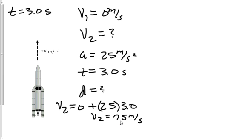Now what about finding displacement? Well, we have a variety of ways we can find displacement here. Let's just use the V2 squared equation. So 75 squared is equal to 0 squared plus 2 times 25 times D. Displacement is equal to 113 meters.